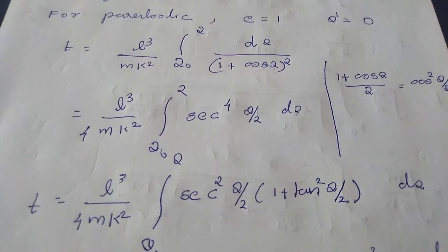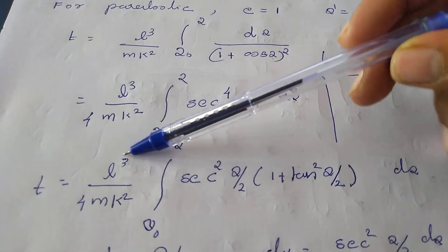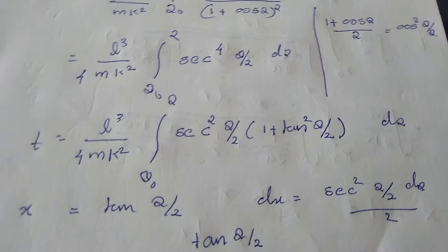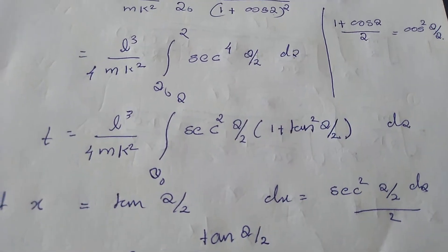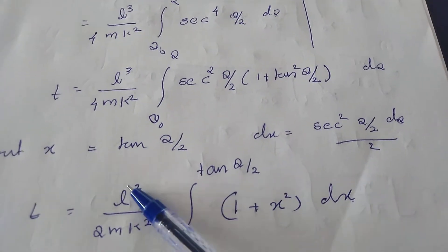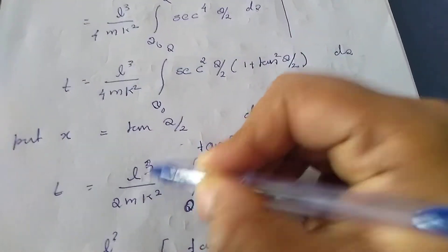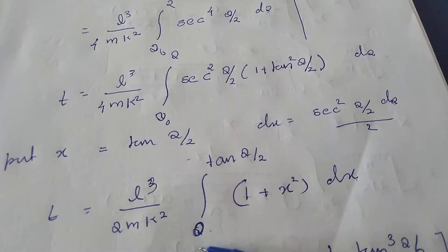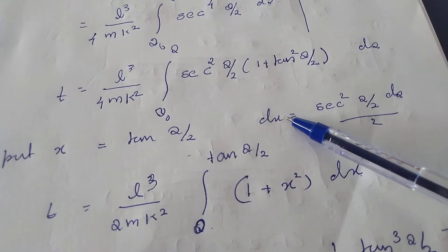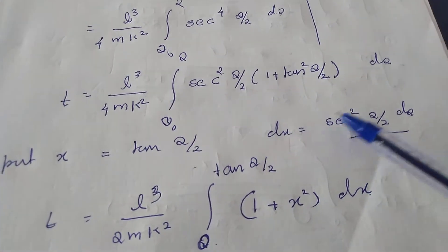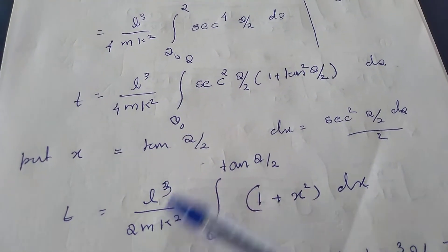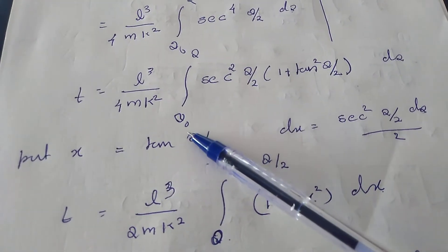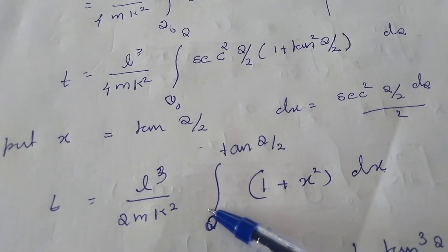Our expression becomes t equals L cubed by 4mk squared times the integral of secant to the 4th (theta by 2) d theta. We check: t equals L cubed by 2mk squared times the integral. Now we substitute x equals tan(theta by 2), so dx equals secant squared(theta by 2) times d theta by 2, meaning d theta equals 2 dx. Then the integral becomes t equals L cubed by 2mk squared times the integral of secant squared(theta by 2) times 2 dx over (1 plus x squared). With theta0 equal to 0, the lower limit is 0.